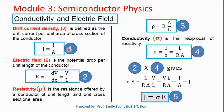Drift current density is defined as the drift current per unit cross-sectional area of the conductor. It is denoted by J and we can write J equal to I upon A — current per unit area of cross-section of the conductor. Let us call this equation number one. Now electric field can be defined as the potential drop per unit length of the conductor, so by definition E equals minus dV/dx, or E equals V upon L. Let us call this equation number two.